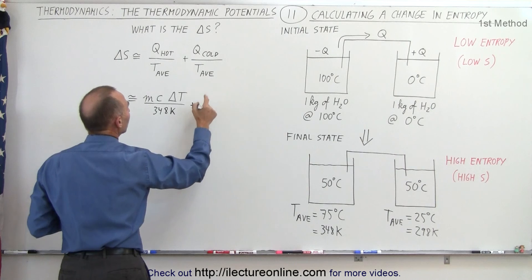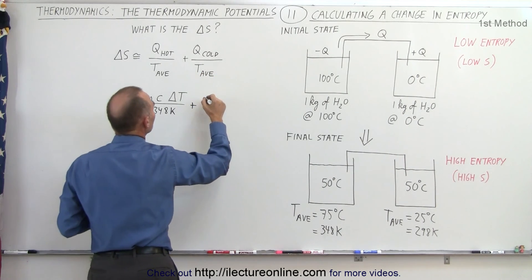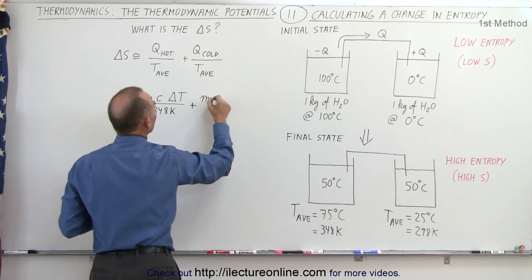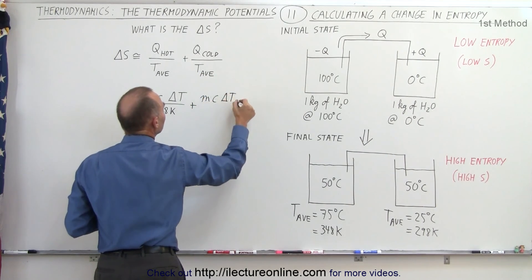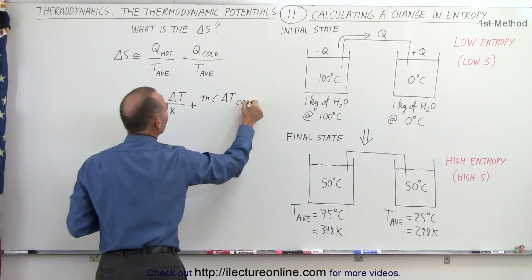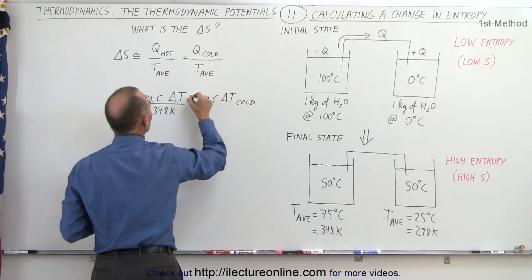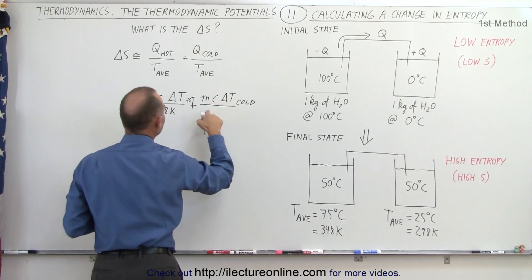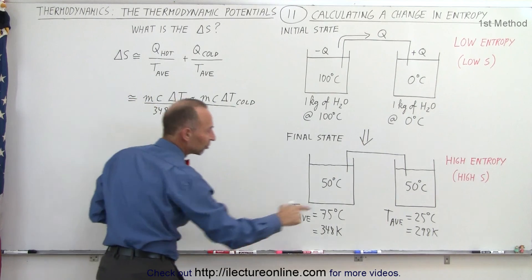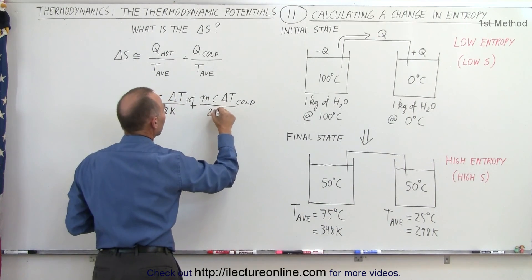We add to that the MC delta T for the cold reservoir, and we divide that by its average temperature. In this case the average temperature is going to be 298 Kelvin.